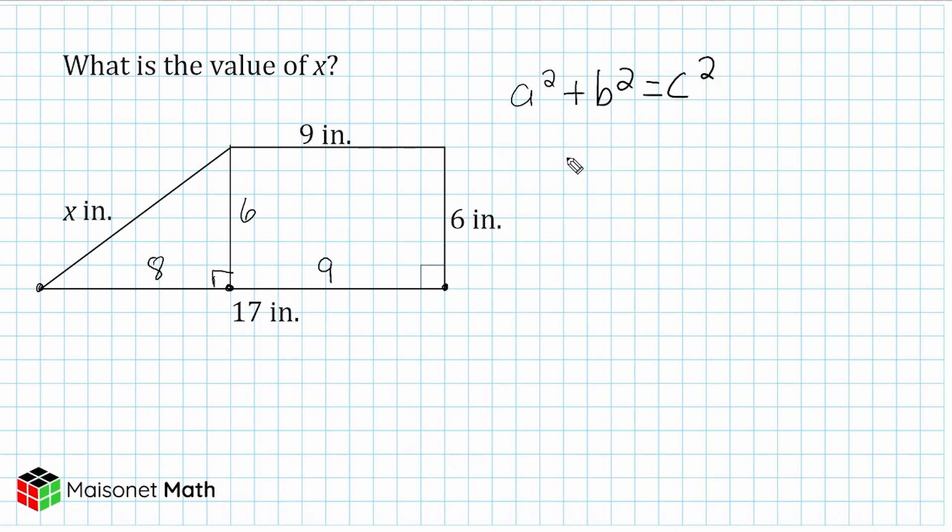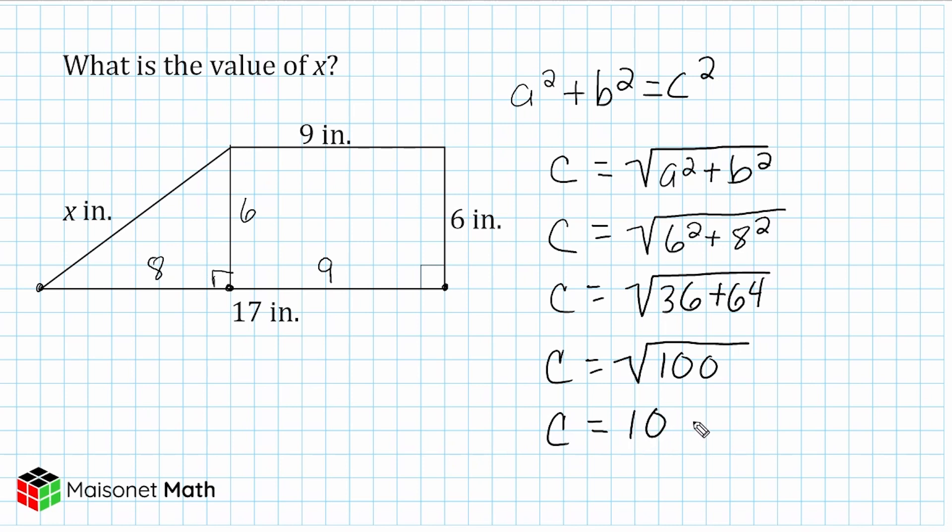So what we're going to do is take our two legs, which are six and eight, and plug them into this equation. So we're going to take six squared and add that to eight squared. And after solving everything underneath this radical symbol, we're going to take the square root of that total. So we're going to square six, which is 36, and square eight, which is 64. And to figure out what c is, we just take the square root of 100. And we would say that c is equal to 10 inches.